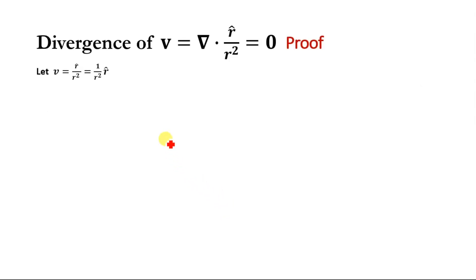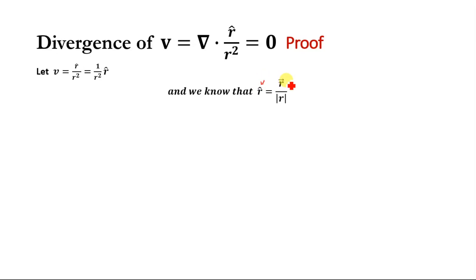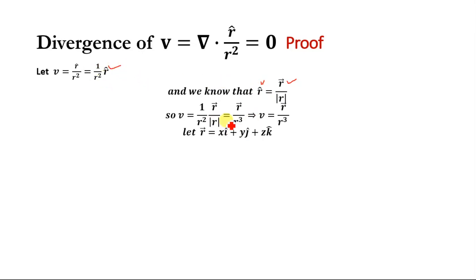Let V be the vector function r̂/r². According to the definition of r unit vector, r̂ = r⃗/r. Substituting this value of r̂ into the equation, we get V = r⃗/r³.